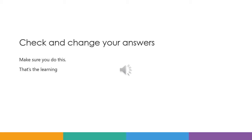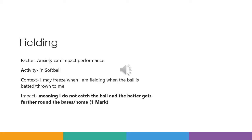Now it's time to check and change your answers. Make sure you do this — that's the learning. So for fielding, it would look like this. Factor: anxiety can impact performance. Activity: in softball. The context would be: I may freeze when I'm fielding when the ball is batted or thrown to me. And the impact on performance would be: meaning I do not catch the ball and the batter gets further around the bases or home.